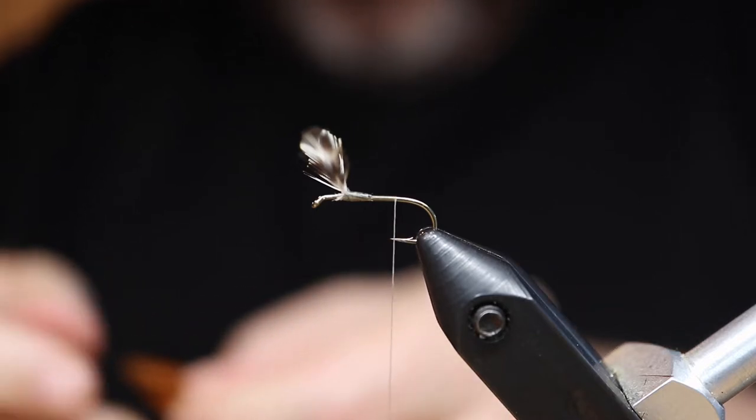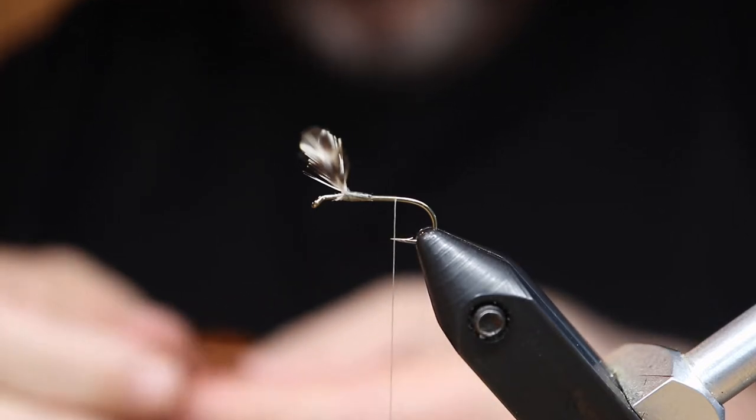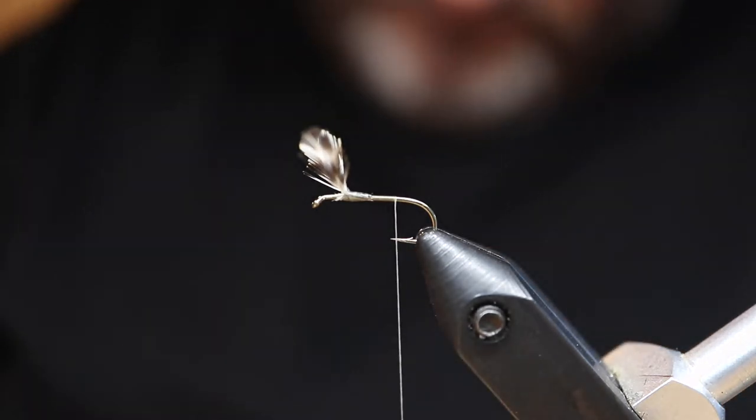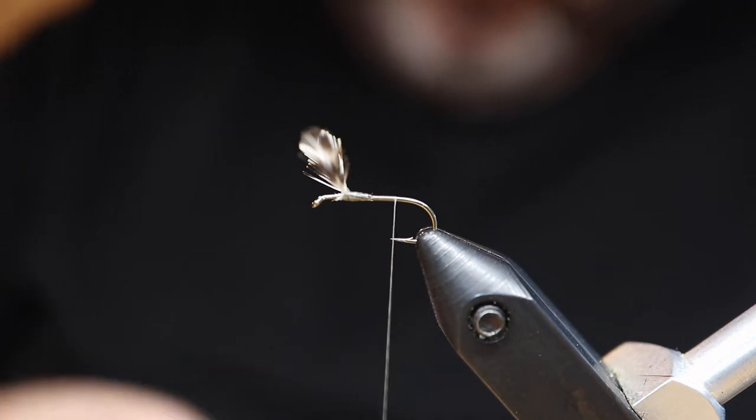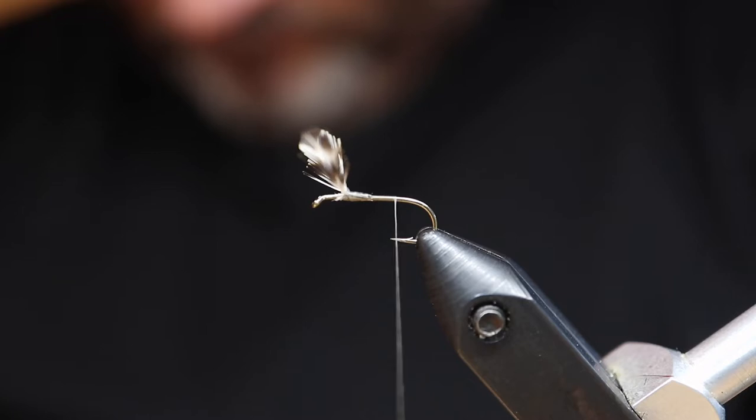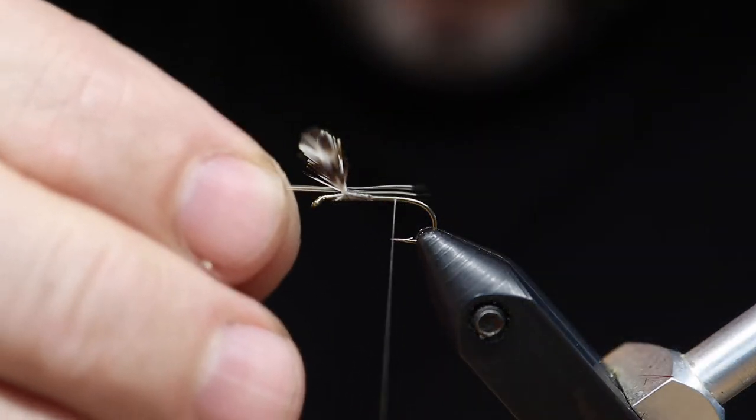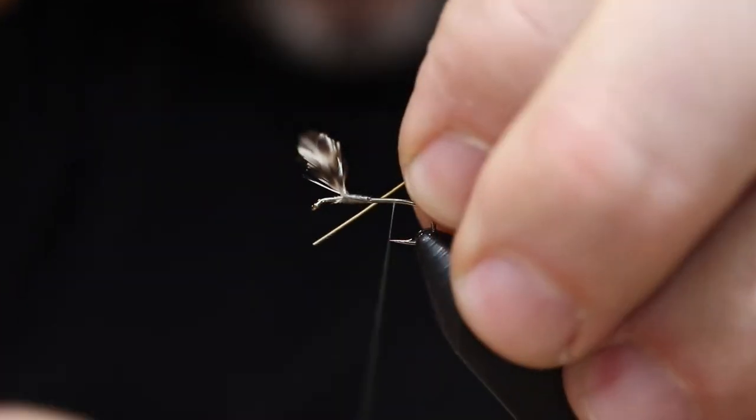The tail is golden pheasant tippets. The original pattern was two. Halliday himself evolved this fly to later change the wing set to be more upright, to have more pheasant tippets as the tail, and to wrap the hackle a little bit more in the front. We'll talk about that in a second when we get there.